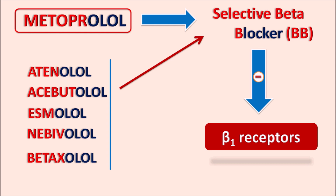Metoprolol blocks beta-1 receptors which are located on the heart. In this video we will discuss how this drug acts, its important precautions, drug interactions, and side effects when used for cardiovascular disorders.